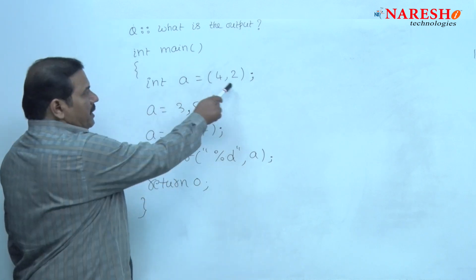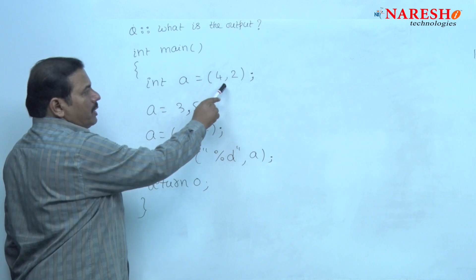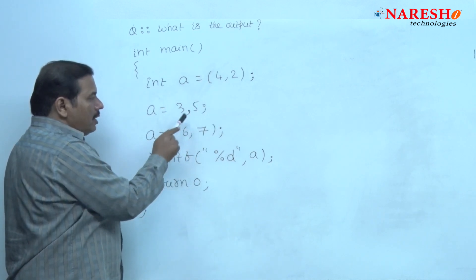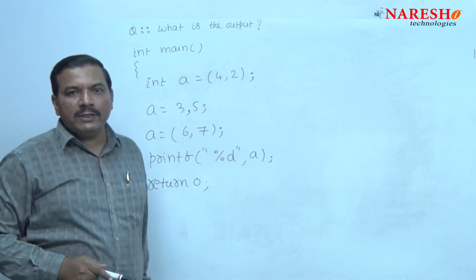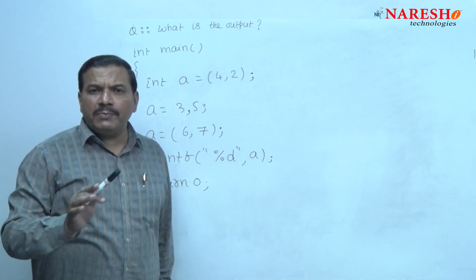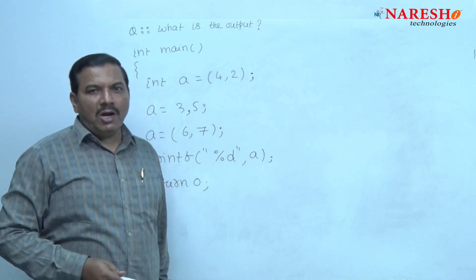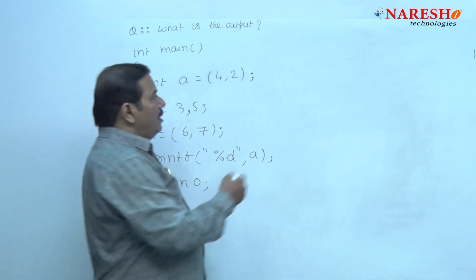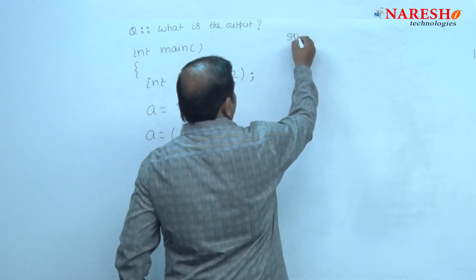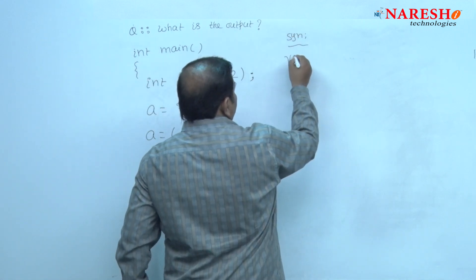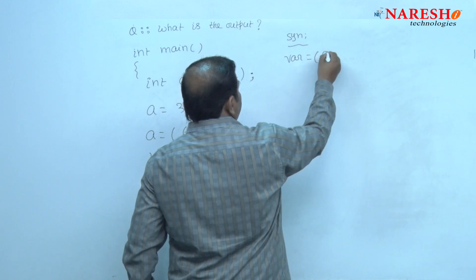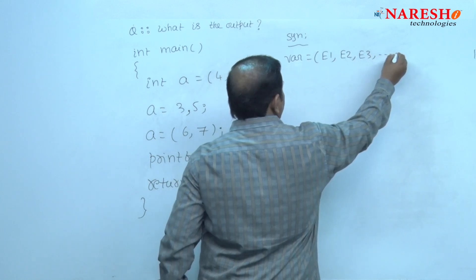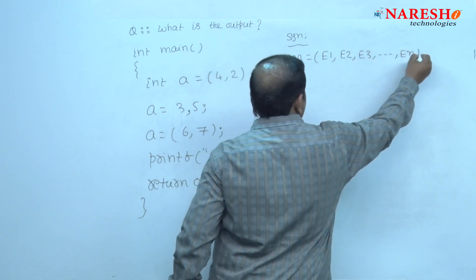In this expression, I separated the values 4 and 2 with comma, and even in these two statements, the values are separated with comma. Let me explain the syntax to use the comma operator and then I will come back to this question. The syntax is: variable name = expression1, expression2, expression3, ... expressionN.